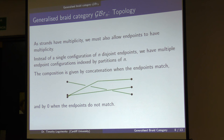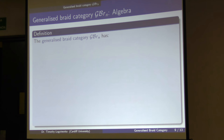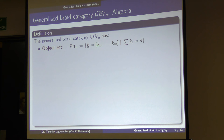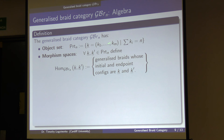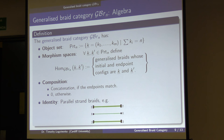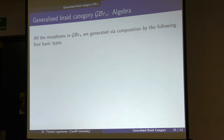Algebraically, you arrive at the following definition. A generalized braid category has objects given by partitions of N, written as a vector k_ = (k_1, ..., k_m) such that the sum of all k's is N. For any two partitions of N, the morphism space between them consists of generalized braids with initial and endpoint configurations k and k' up to isotopy. Composition is concatenation when endpoints match, zero otherwise. The identity is the parallel strand braid. For each partition of N, we have this parallel configuration.